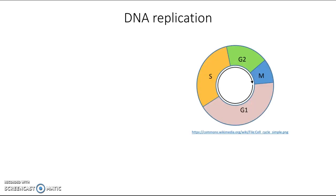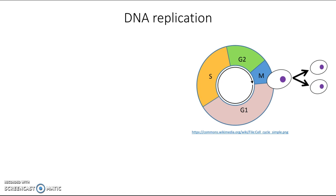A typical cell will start its life right around here and then move through this G1 phase, growing, making proteins, doing its job as a cell, and then if it is destined to divide, it will continue on through these other phases until it gets to the M phase where that one cell will give rise to two new cells. We refer to these as the parent cell and the daughter cells, regardless of whether they're in a male or a female organism.